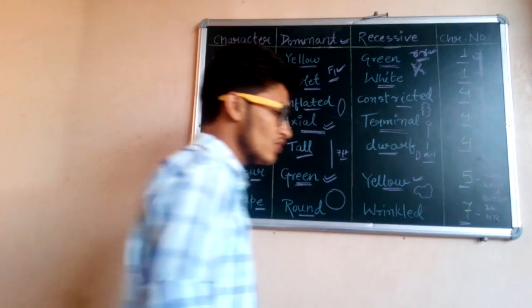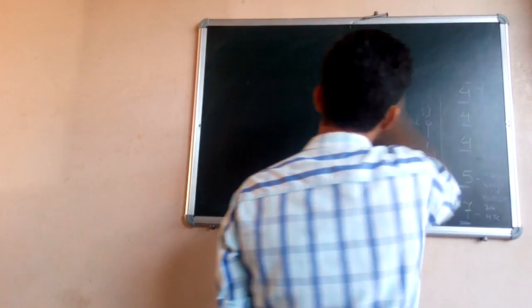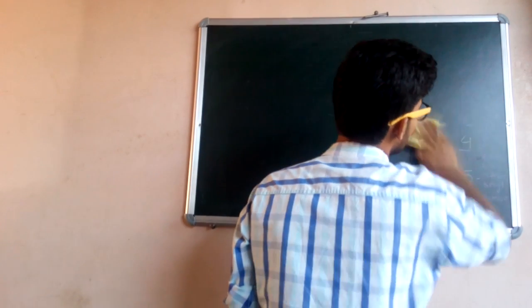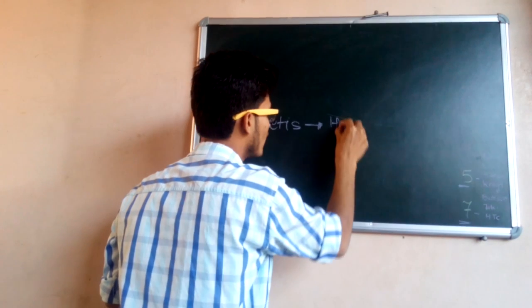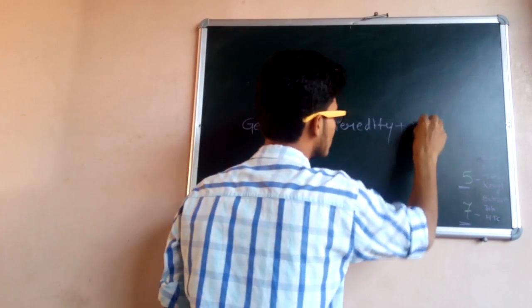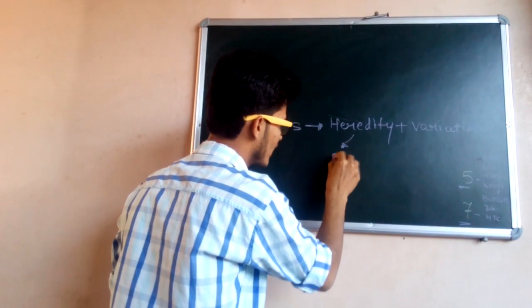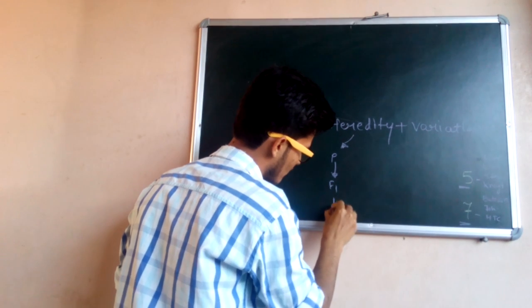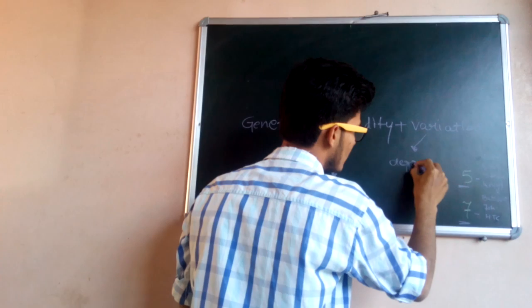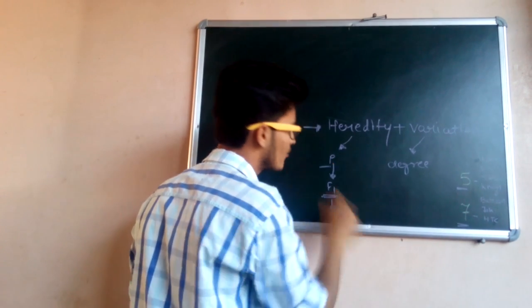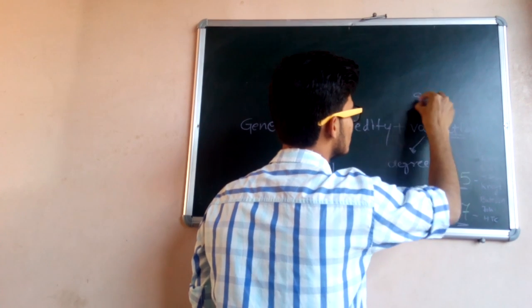Now some terminology and basic facts about genetics. Genetics is the study of heredity and variations. Heredity is the transfer of characters from parents to offspring — from parents to F1 to F2 generation and so on. Variation is the degree by which offspring differ from their parents; this degree of difference in appearance is known as variation, which is the result of sexual reproduction.